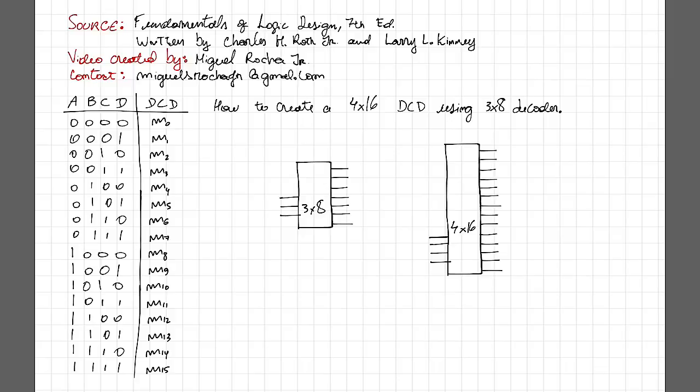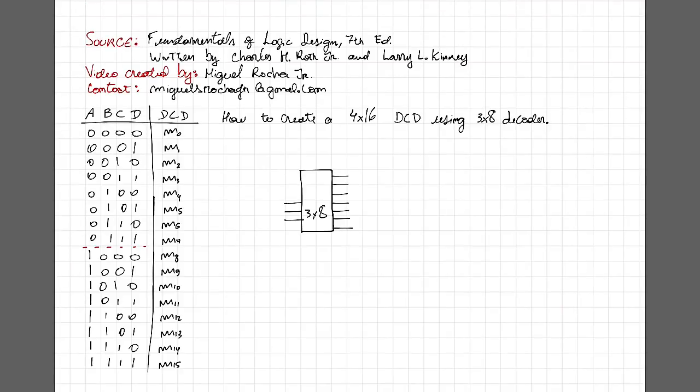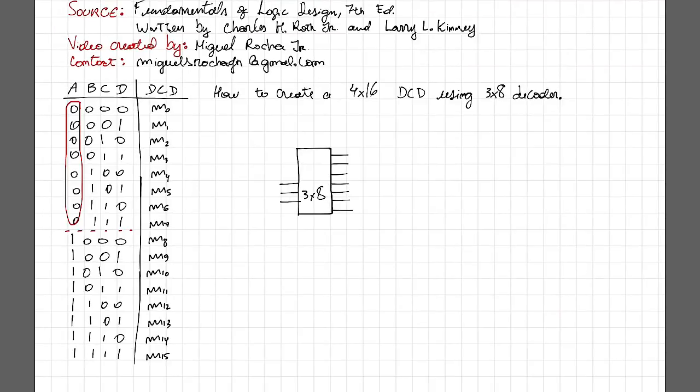As you guys can see, I already created the truth table for the 4x16 decoder. When you create a truth table, you can realize one thing about it. You can divide the truth table in two parts: the first part is when A is equal to 0, and the second part is when A is equal to 1.